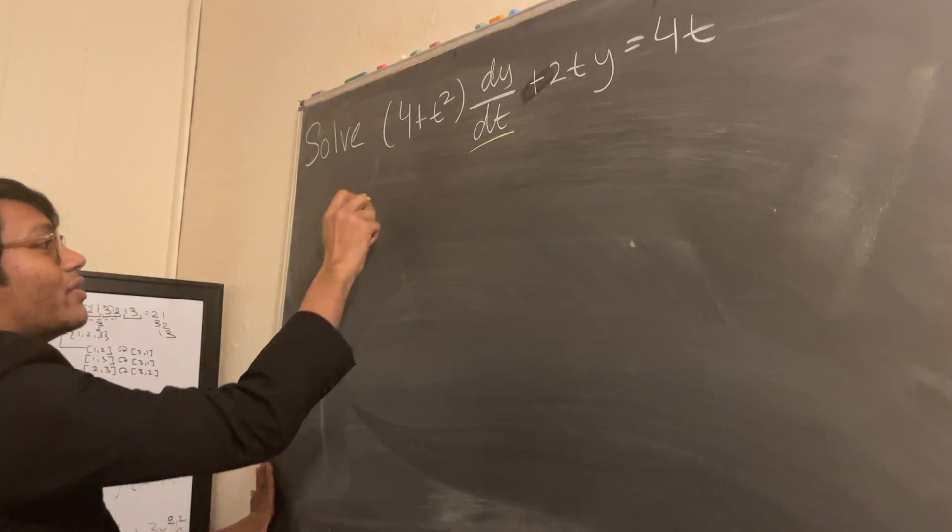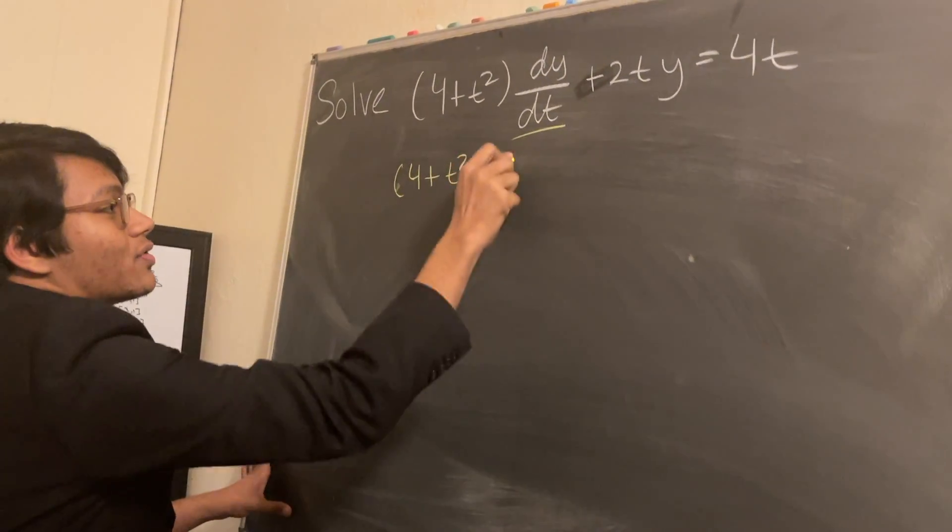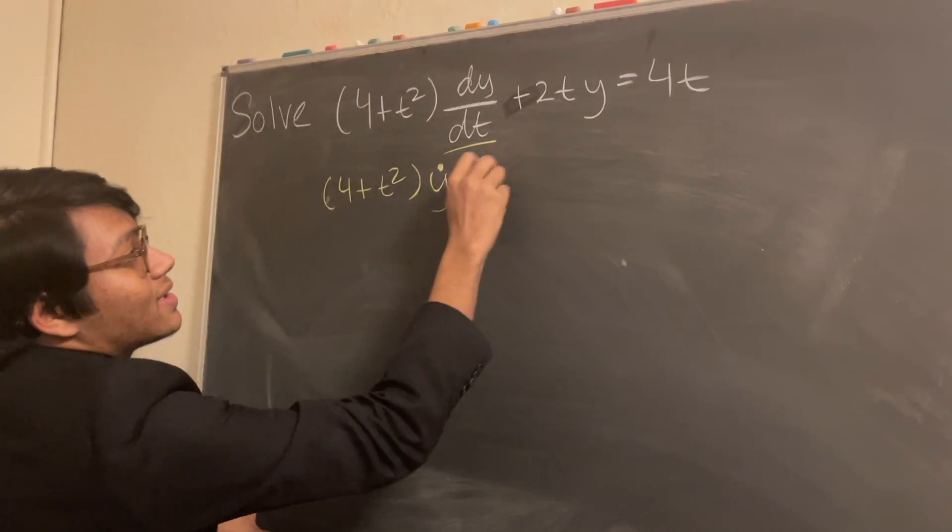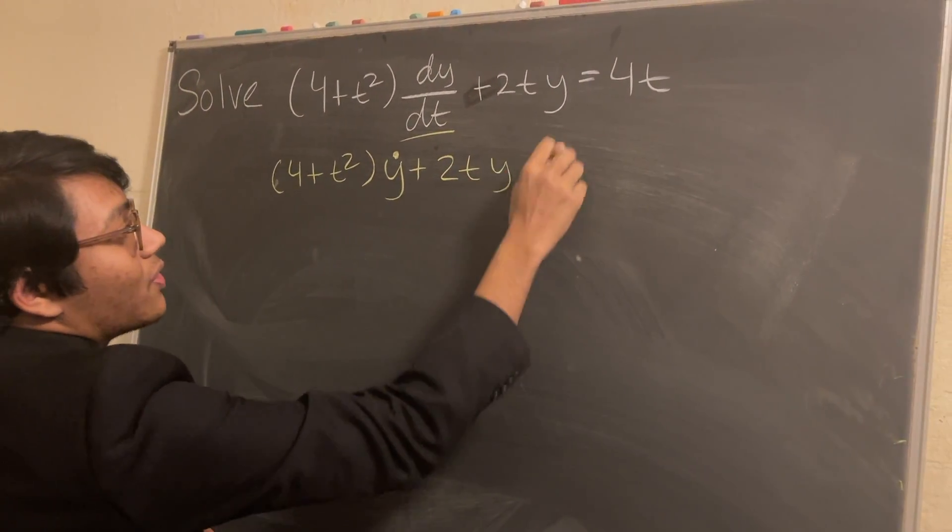So we can first rewrite this differential equation as (4+t²)y', which signifies this derivative, plus 2ty equals 4t.